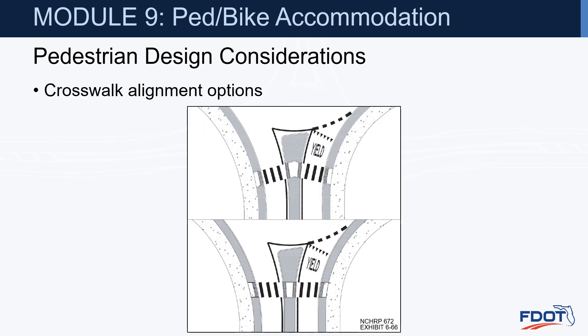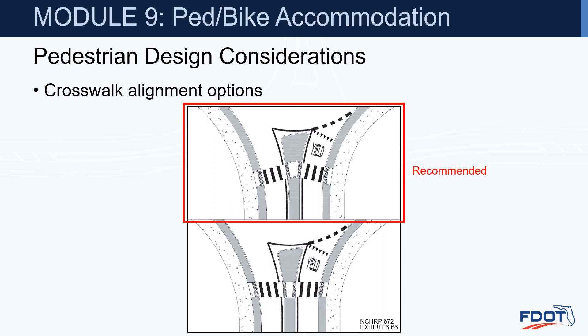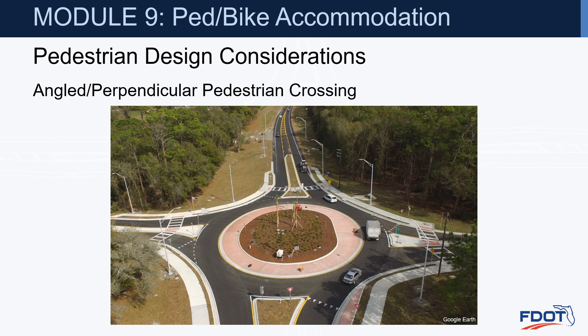There are a couple of crosswalk alignment options shown here. The top one is more of an angled perpendicular type, and the one on the bottom is a straight-through type of design. The Florida Department of Transportation recommends the angled one, which provides the shortest crossing distances for pedestrians. Here's an example of that angled or perpendicular pedestrian crosswalk style, and you can see where it goes through the splitter island it is kinked a little bit and perpendicular to the outside edges of pavement.